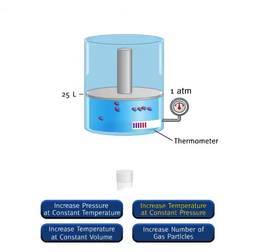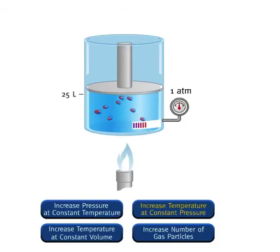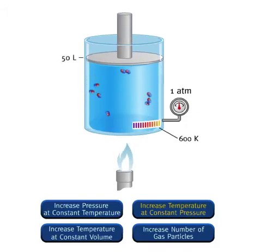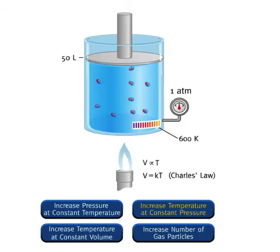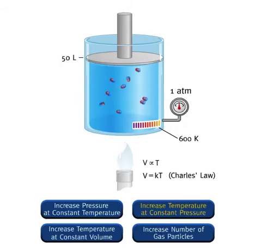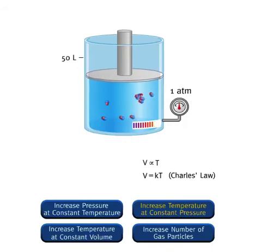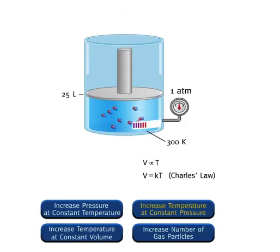Using a Bunsen burner to increase the temperature of the gas, as temperature increases, the volume that the gas occupies increases—volume is directly proportional to the temperature of the gas. We can write volume equals k times temperature, where k is a proportionality constant. This relation is known as Charles' Law, which states that the volume of a fixed amount of gas is directly proportional to the gas temperature at constant pressure. As the temperature is doubled at constant pressure, the volume doubles. When the Bunsen burner is removed, the temperature decreases and the volume decreases, continuing until the temperature equals the external temperature.